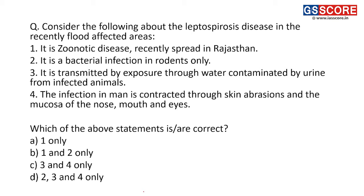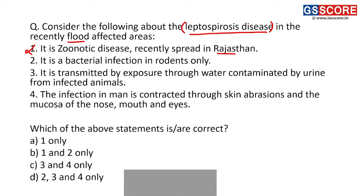First question: consider the following about leptospirosis disease in the recently flood-affected areas. The question is about a disease called leptospirosis. Statement one: it is a zoonotic disease recently spread in Rajasthan. This statement is incorrect because leptospirosis is more often seen during floods, and in Rajasthan we have not witnessed floods in the recent past. It is mostly related to areas like Bangalore, Karnataka and Kerala. First statement is incorrect.